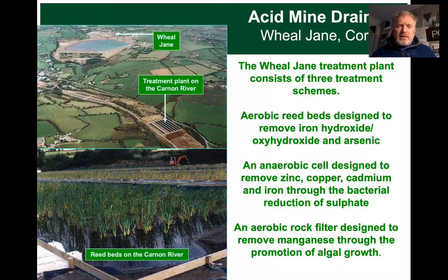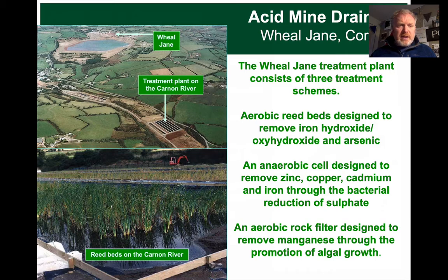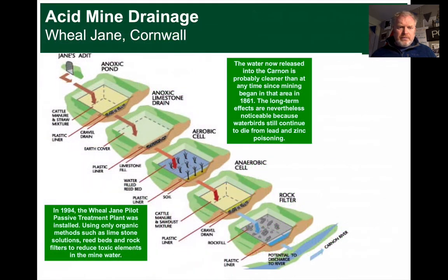The way these are dealt with now is with treatment plants. There are reed beds to try and create a biological solution to removing some of the metals. An anaerobic cell to try and get other metals to precipitate, and algae are also used to remove a different set of metals. This is a summary of the different treatment methods that have to be used before this water can safely be discharged into the river.